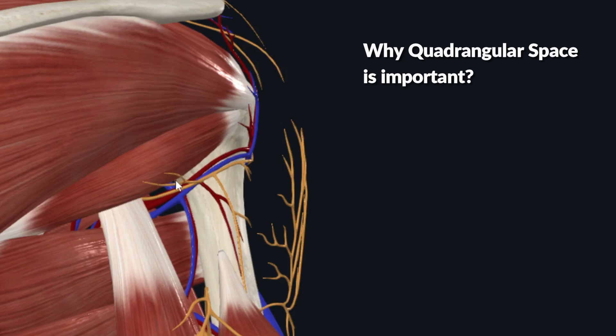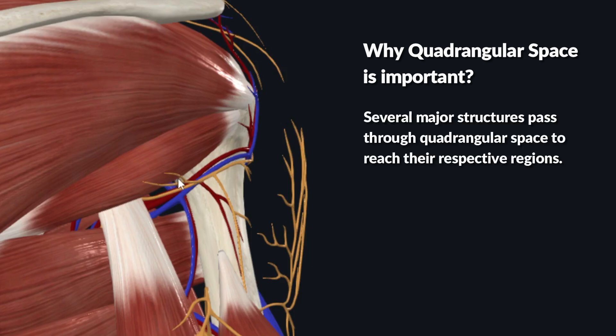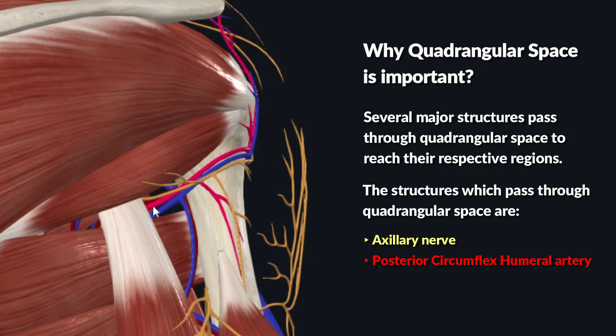The quadrangular space is important because several major structures emerge through this intermuscular space to reach their terminal destinations. Those important structures are the axillary nerve, the posterior circumflex humeral artery, and the posterior circumflex humeral vein.